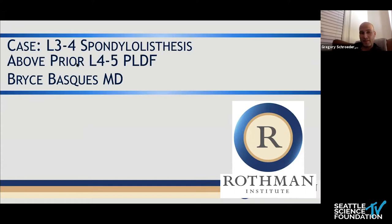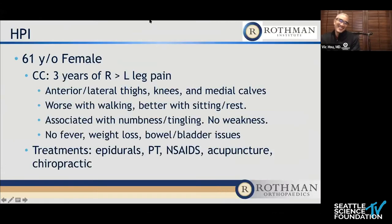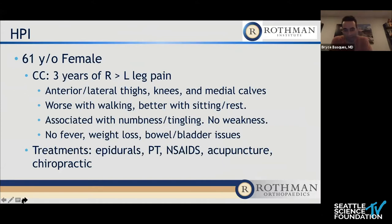I'm going to have Dr. Bryce talk about a case that one of my partners did. So I'm Bryce, one of the spine fellows at Rothman this year, and this is a case that Dr. Vaccaro asked me to present. This is a 61-year-old female who has had three years of ongoing right more than left leg pain. The pain is primarily over the anterior lateral thighs, knees, and medial calves — kind of an L4-ish type distribution. It's worse with walking, better with sitting and rest, associated with numbness and tingling. No frank weakness, no red flags such as fever, weight loss, or bowel and bladder issues. The patient has had multiple bouts of conservative management including epidurals, PT, NSAIDs, acupuncture, and chiropractic care.